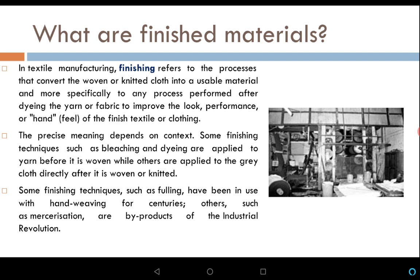Now let us talk about finished materials. In textile manufacturing, finishing refers to the process that converts the woven or knitted cloth into a usable material — more specifically, any process performed after dyeing the yarn or fabric to improve the look, performance, or feel (the 'hand') of the finished textile or clothing. Some finishing techniques such as bleaching and dyeing are applied to yarn before it is woven, while others are applied to the gray cloth directly after it is woven or knitted.